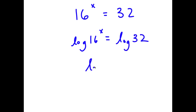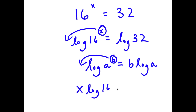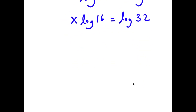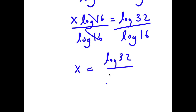Now if I have something in the form log a to the power of b, I can move my exponent b to the front — so this is equal to b times log a. For log 16 to the power of x, I can move x to the front, so now I have x times log 16 is equal to log 32. Now I'm going to divide both sides by log 16, so these two cancel out and I have x is equal to log 32 over log 16.